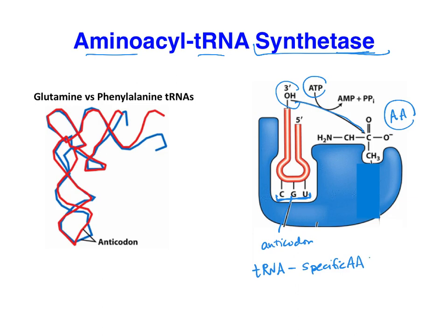Here on the right is our cartoon of aminoacyl tRNA synthetase. Down here at the bottom, you can see we've got the anticodon of the tRNA shown as CGU. And then on the right, we've got the specific amino acid binding to our enzyme. So it's with the help of an aminoacyl tRNA synthetase that each tRNA can get hooked up with its specific amino acid. Recall that we have 20 different amino acids, which means there's got to be at least 20 different aminoacyl tRNA synthetases floating around in our cells — in the cells of E. coli, and in the cells of plants, animals, bugs, and any other organisms you can think of.